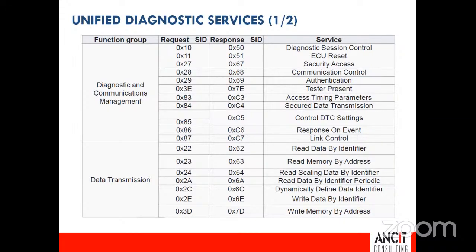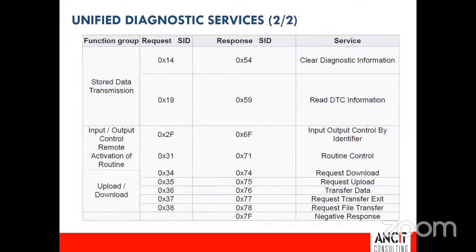All UDS services help in one of three ways: reading an error, reading or writing information from/to the ECU, or flash programming. The services are grouped into diagnostic and communications management, data transmission for reading and writing, stored data transmission for reading faults, and other groups for routine control, input/output control, and request download/upload. The current UDS stack supports most of these but development is still ongoing.